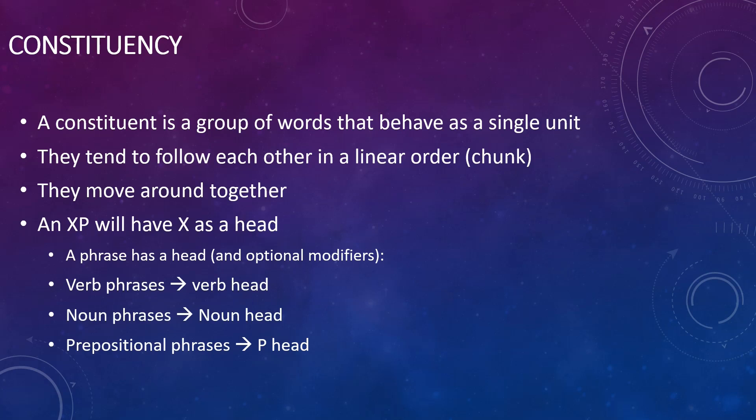Constituents tend to follow each other in a linear order — I like to call them a chunk of words. They tend to move around together in a sentence, and each constituent is centered around a word that we call the head. So for instance, a verb phrase will have a verbal head, a noun phrase will have a noun head, a prepositional phrase will have a preposition as its head, and an adverbial phrase would have an adverb as its head.